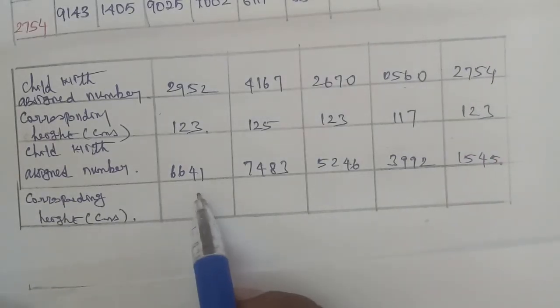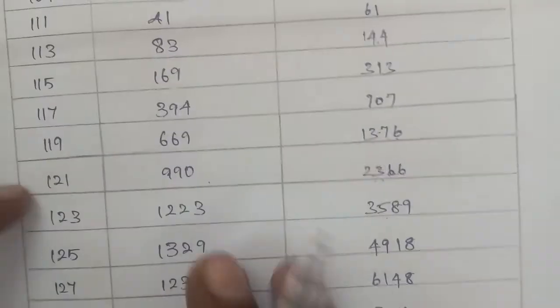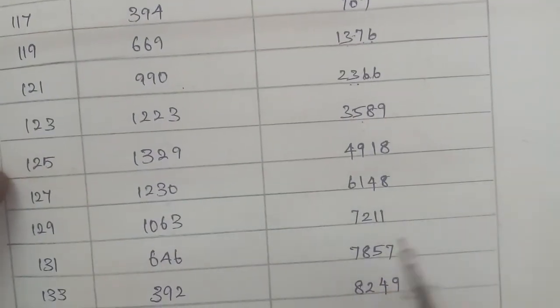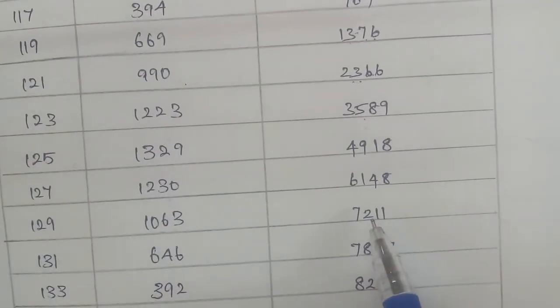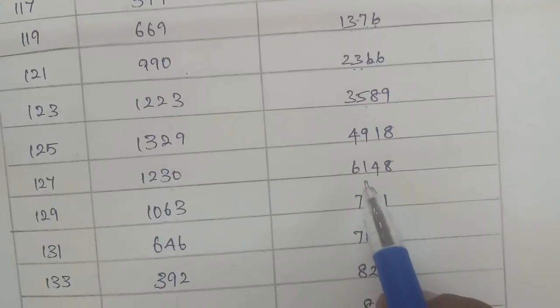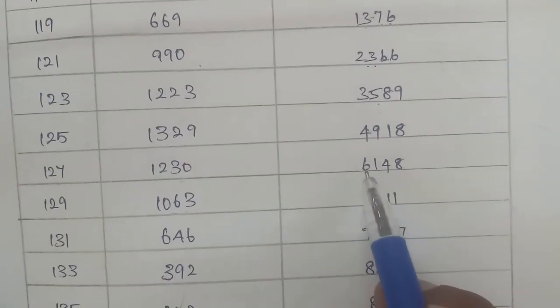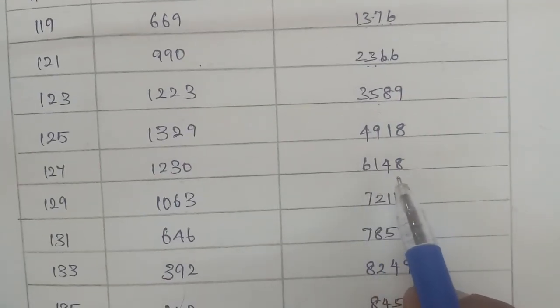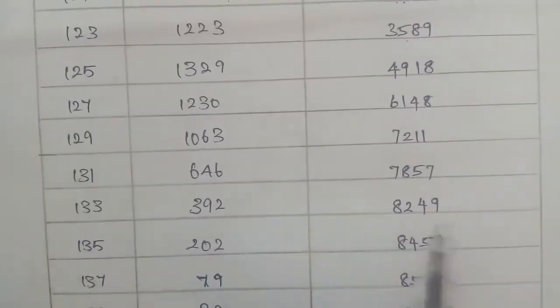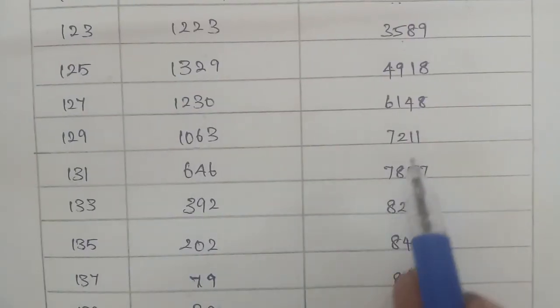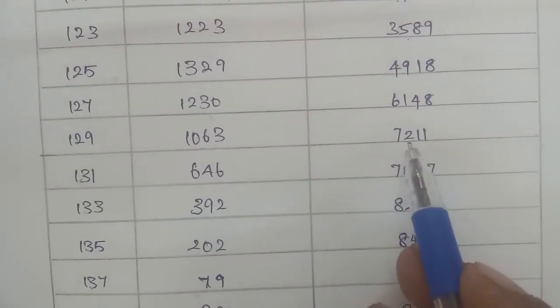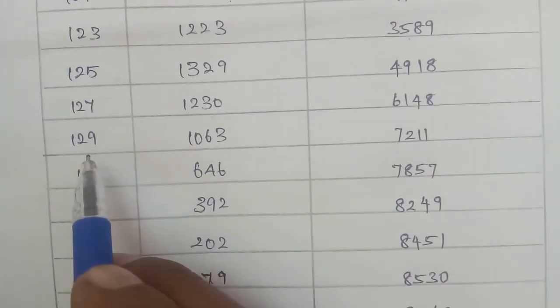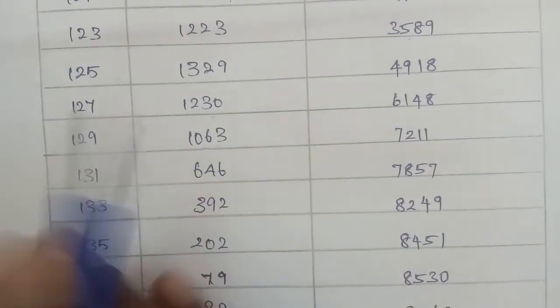Continuing the assignment: 6641 corresponds to cumulative frequency 7211, which gives the corresponding height for that child.